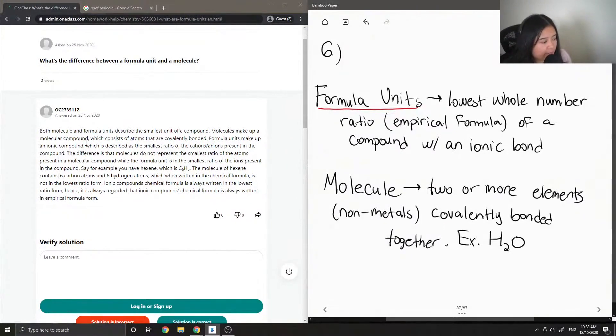which, when written in the chemical formula, is not in the lowest ratio form. Ionic compounds' chemical formula is always written in the lowest ratio form, hence it is always regarded that ionic compounds' chemical formula is always written in empirical formula form.